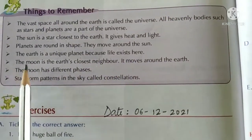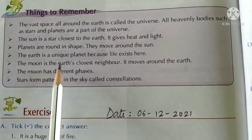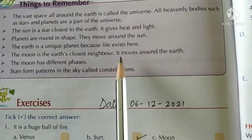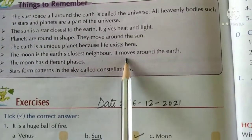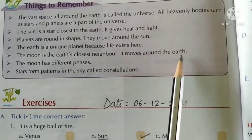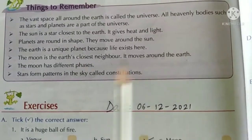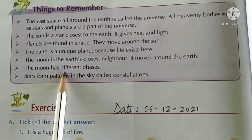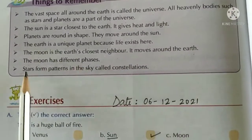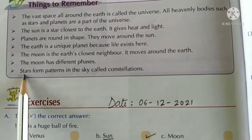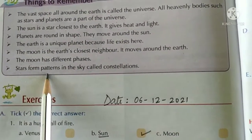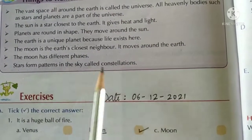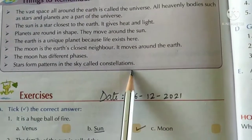The earth is a unique planet because life exists here. The moon is the earth's closest neighbor. It moves around the earth. The moon has different phases. Stars form patterns in the sky called constellations.